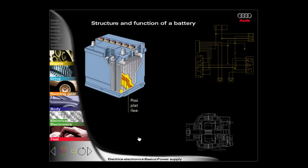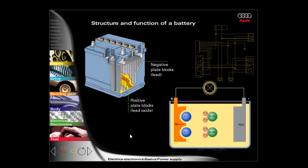The main components of a battery are the positive lead oxide plates and the negative lead plates. The electrolyte, which is comprised of diluted sulphuric acid, is located between these. During discharge, the lead oxide and the lead react with the sulphuric acid, leading to lead sulphate, lead and sulphuric acid.